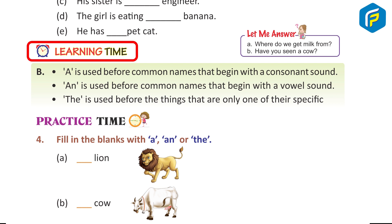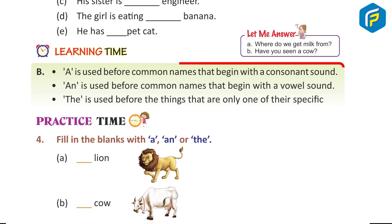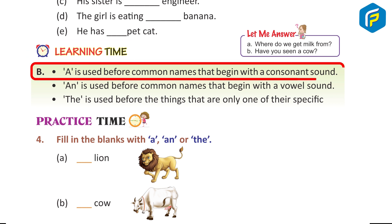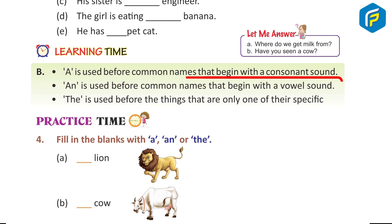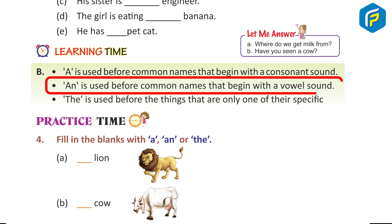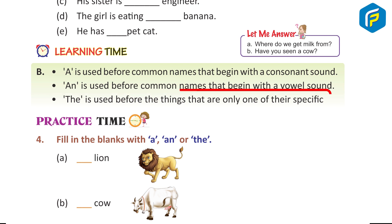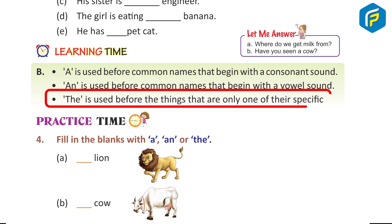Learning Time B: 'A' is used before common names that begin with a consonant sound. 'An' is used before common names that begin with a vowel sound. 'The' is used before things that are only one of their specific kind.